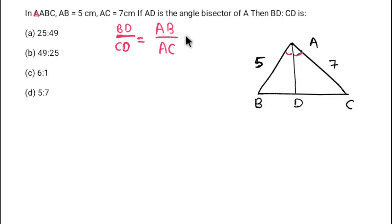Here, AB is 5 and AC is 7, so BD by CD equals 5 by 7. The required ratio is 5:7, so option D is right.